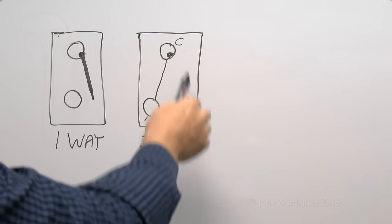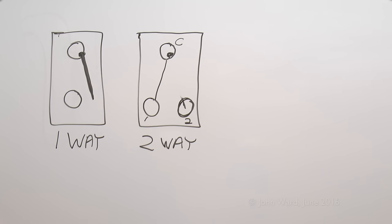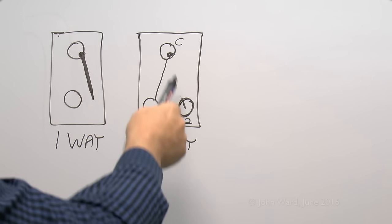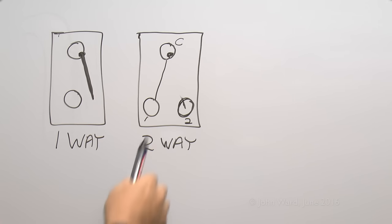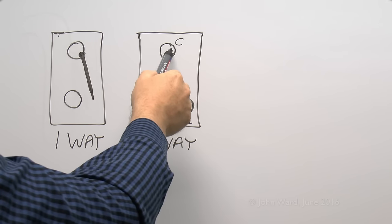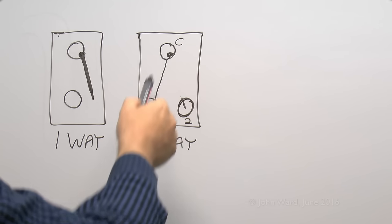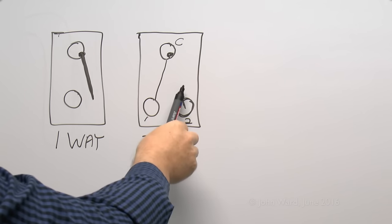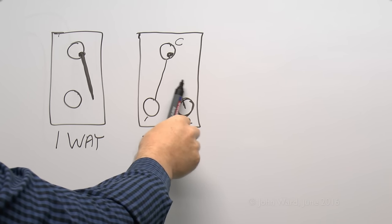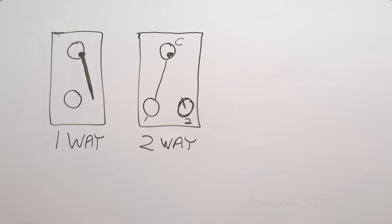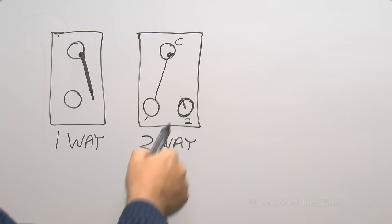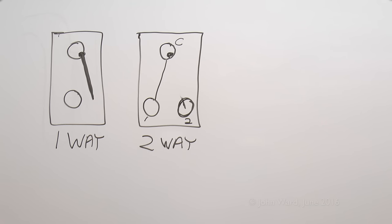This two-way switch is by far the most common type available. You can use one of these just as a normal on-and-off switch by connecting between the common terminal and one of the bottom terminals and ignoring the other, because it does exactly the same as a one-way switch. You just have that extra terminal there if you wish to use it for two or more switch positions.